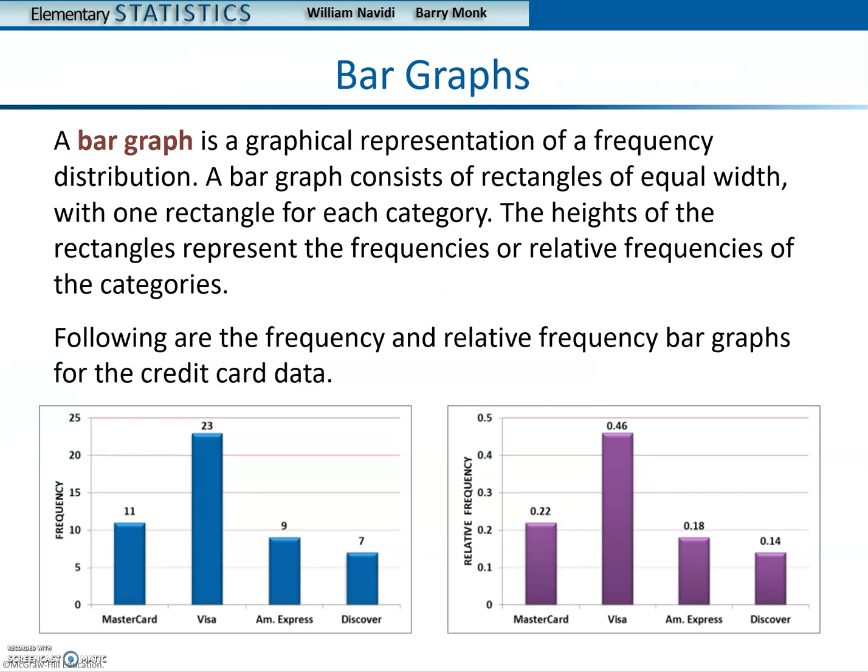A bar graph is a graphical representation of a frequency distribution. A bar graph consists of rectangles of equal width with one rectangle for each category. The height of the rectangles represent the frequencies or relative frequencies of the categories.